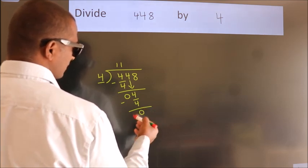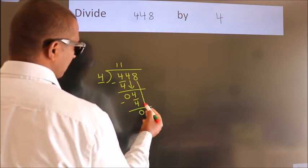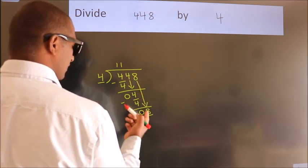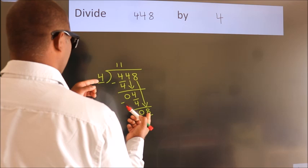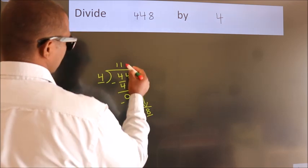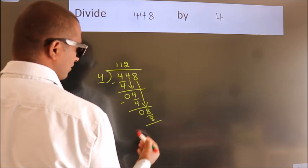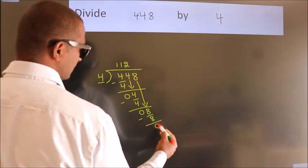After this, bring down the beside number. So 8 down, so 8. When do we get 8? In 4 table. 4 twos, 8. Now we subtract, we get 0.